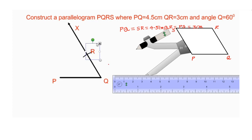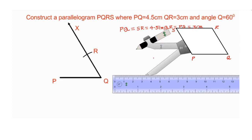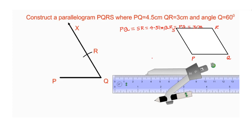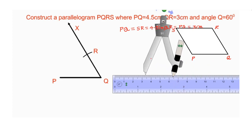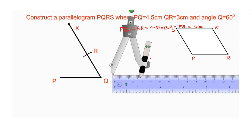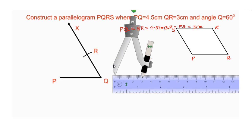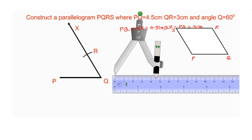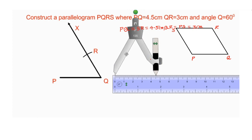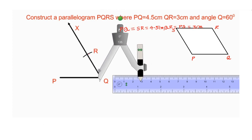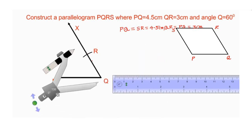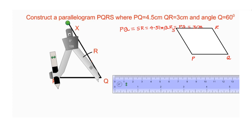In a parallelogram, opposite sides are equal. So QR is equal to PS and PQ is equal to RS. Now take RS equal to PQ equal to 4.5 centimeters — take the radius 4.5 centimeters again. Put the needle of the compass on R and draw an arc.